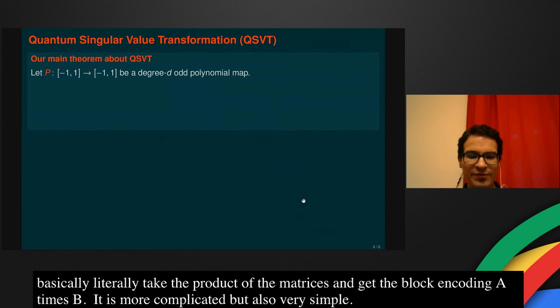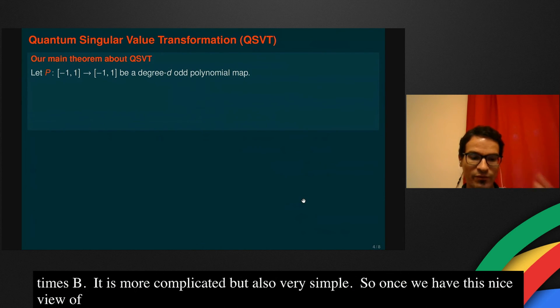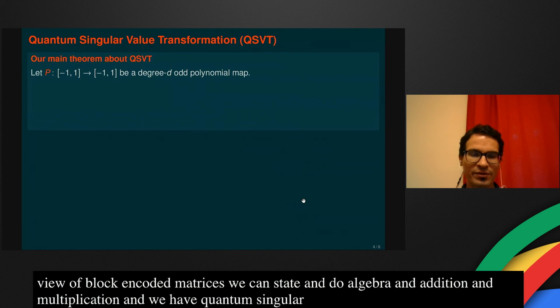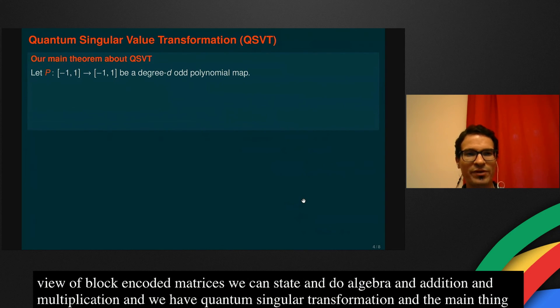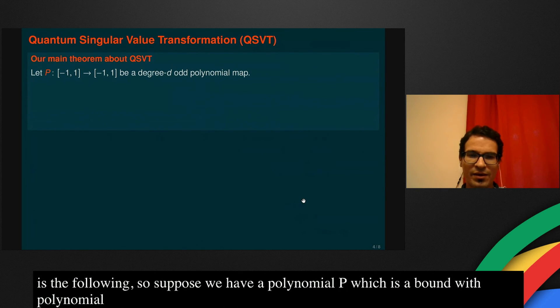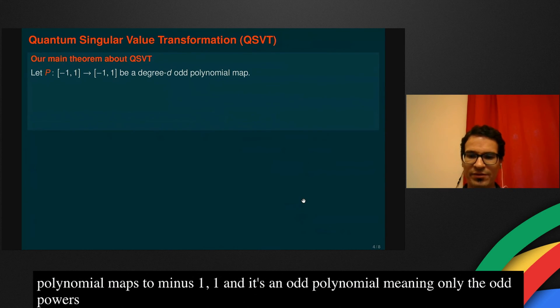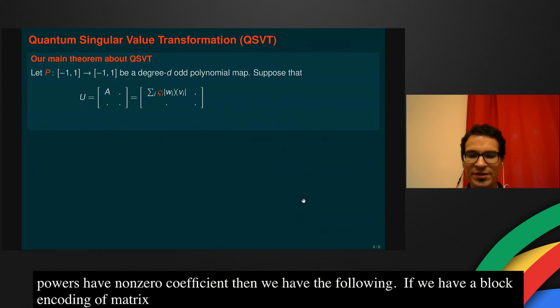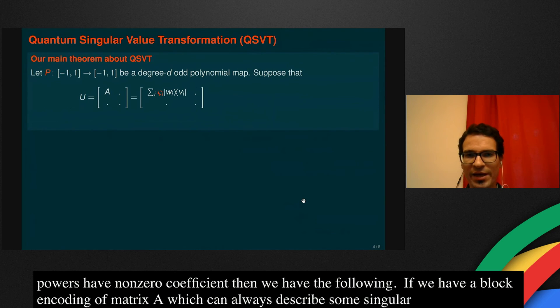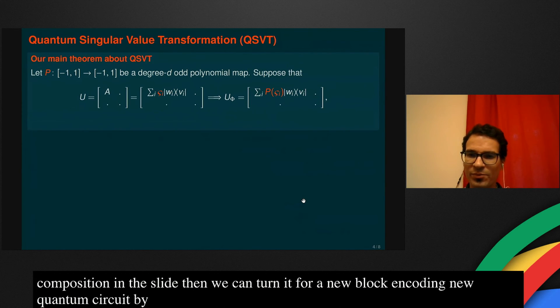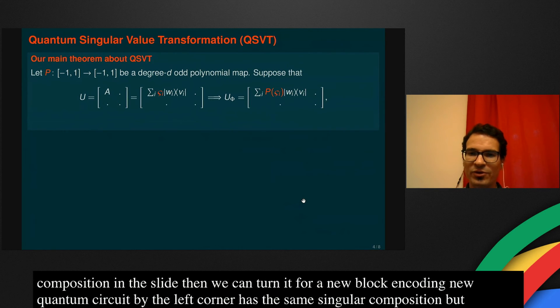Once we have this nice view of block encoded matrices, we can state we can do linear algebra with them, addition, multiplication, and we have quantum singular value transformation. The main result about this is the following. Suppose that we have a polynomial map P, which is a bounded polynomial on the interval minus 1 to 1, maps it to minus 1 to 1. And it's an odd polynomial, meaning that only the odd powers have non-zero coefficient. Then if we have a block encoding of a matrix A, which can always be described as some singular value decomposition in the slide, then we can turn it to a new block encoding, a new quantum circuit, where the top left corner has the same singular value decomposition, but the singular values are transformed according to this polynomial.